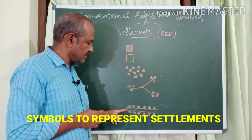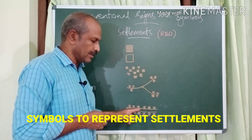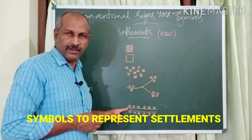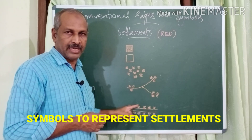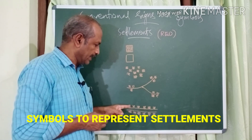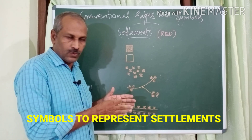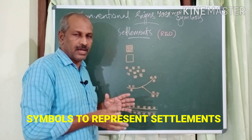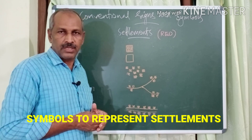In a linear settlement, houses are arranged on either side of a road, railway track, or water body in a linear pattern.